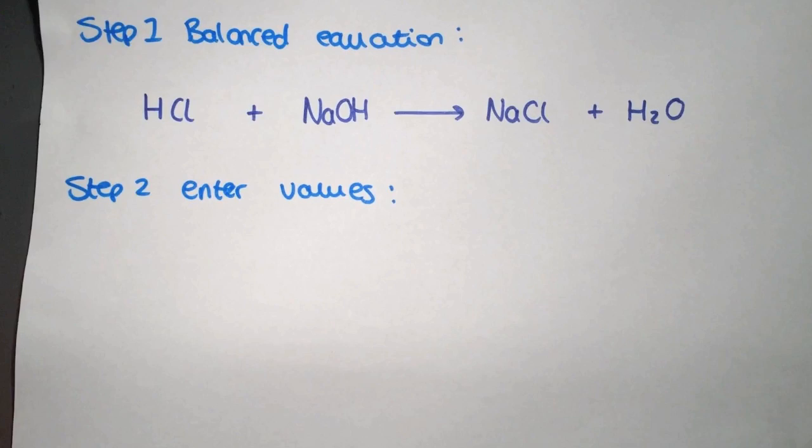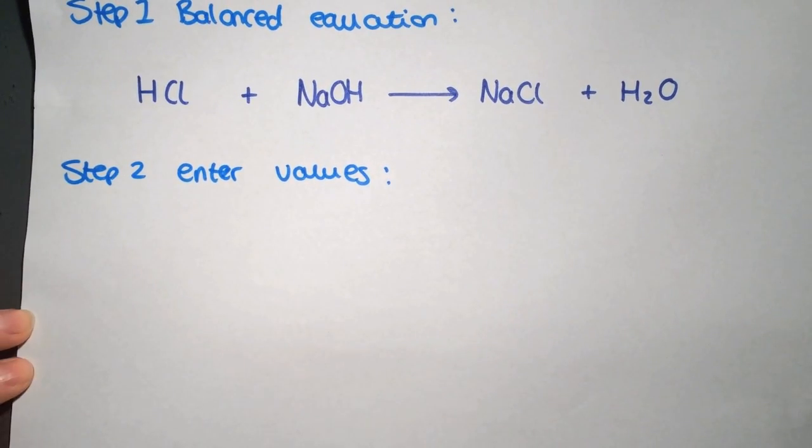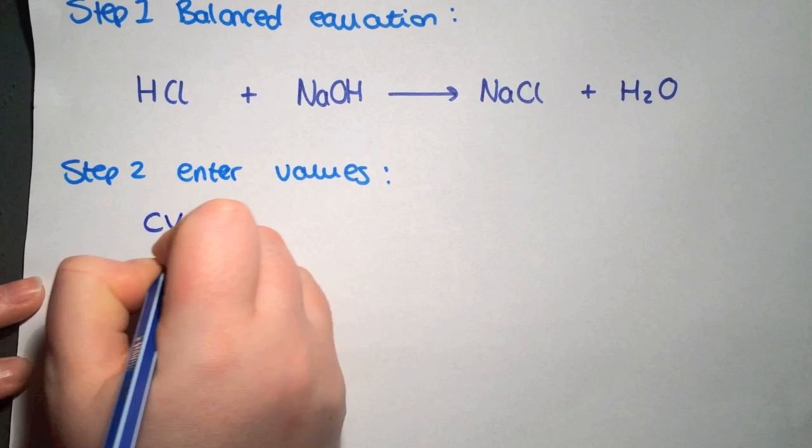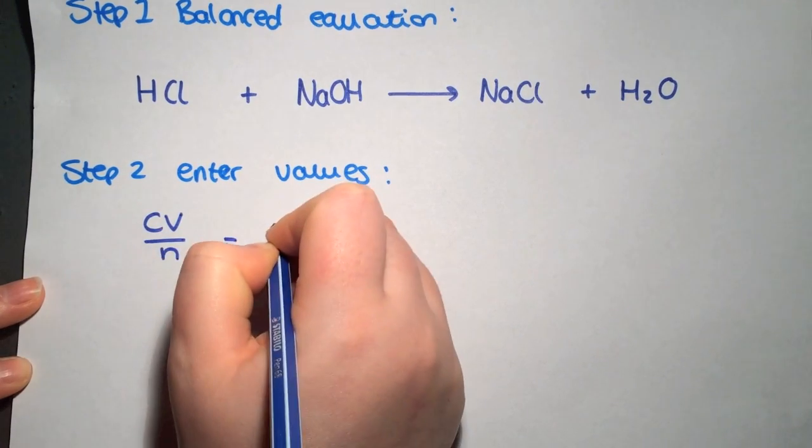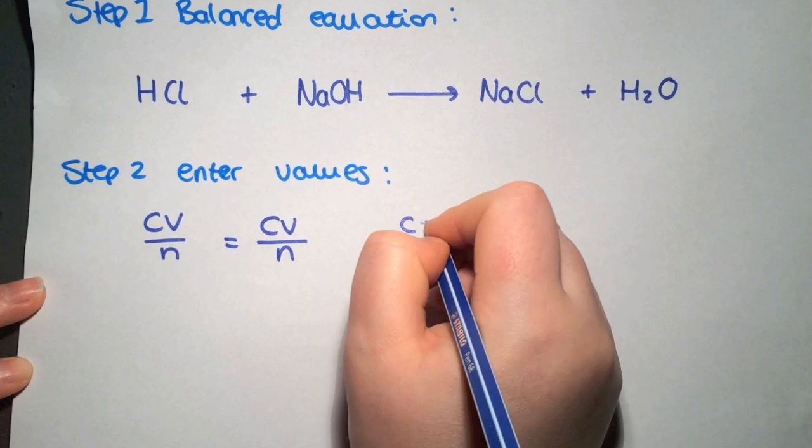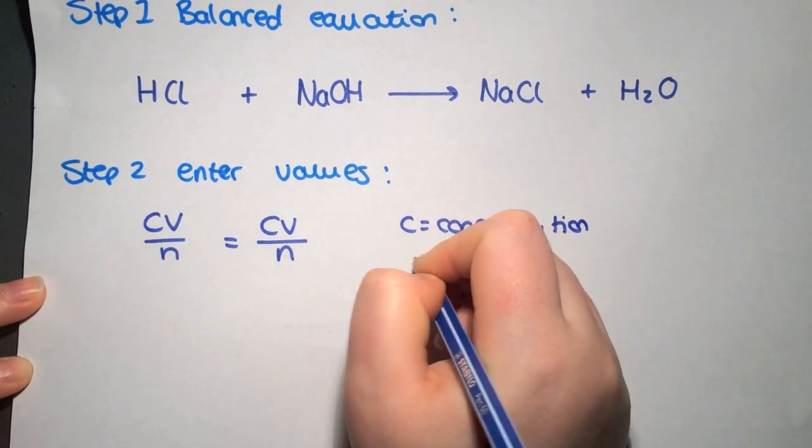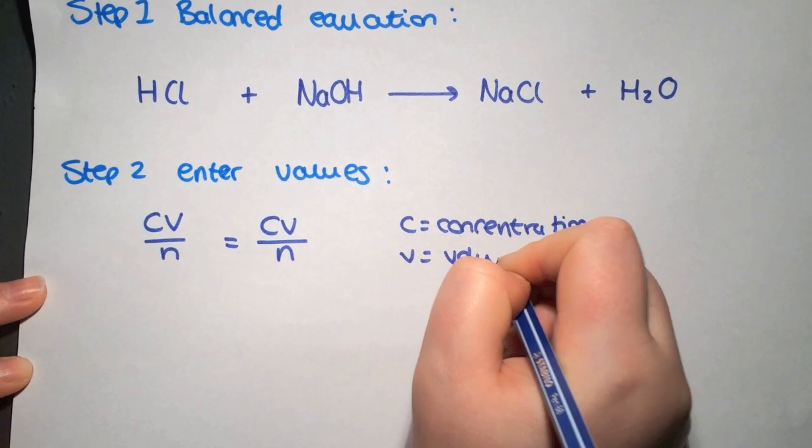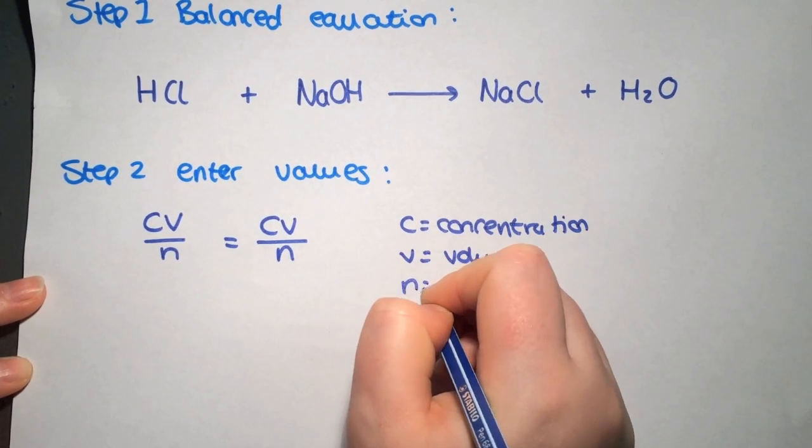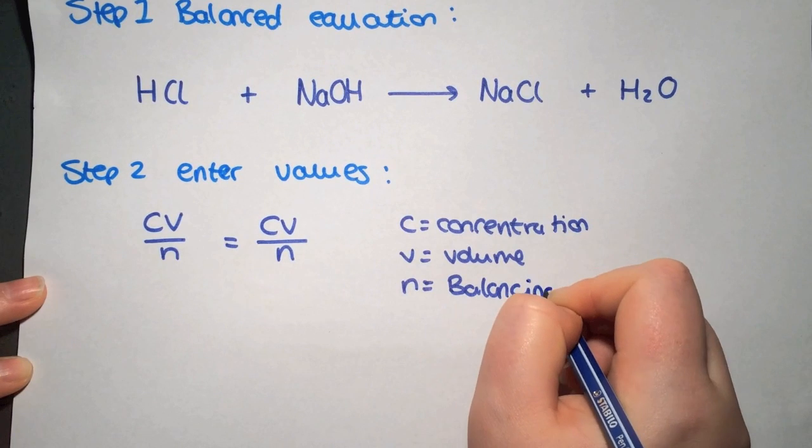In this method we are going to be using the formula that you can find at the front of your data book. We have CV over N equals CV over N, where C equals the concentration, V equals the volume, and N equals the balancing number from your balanced equation.